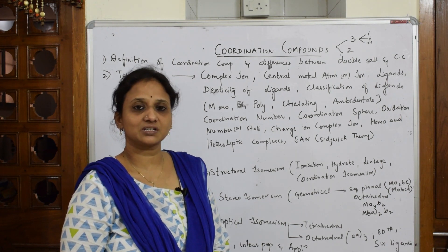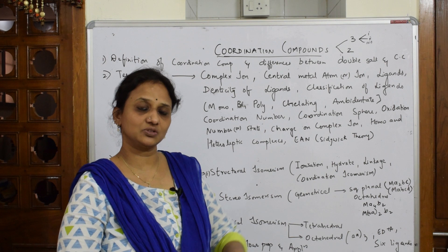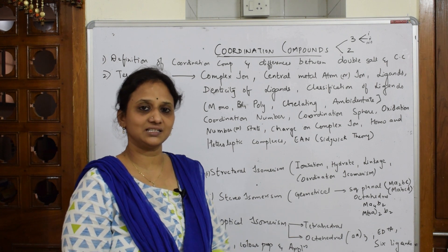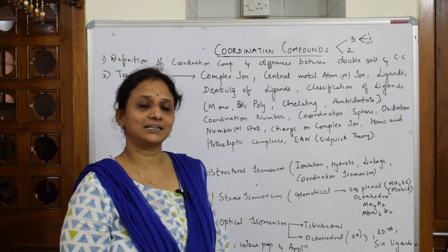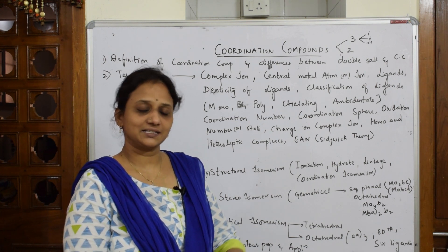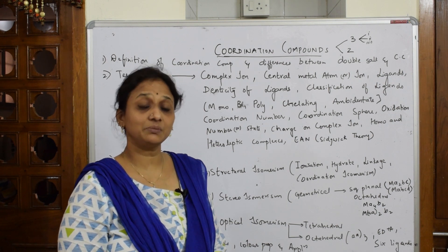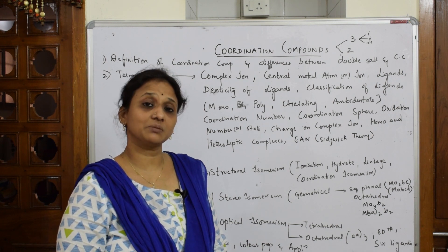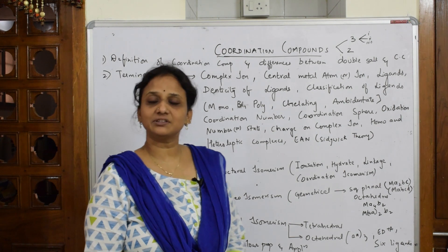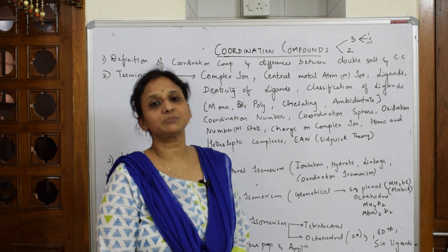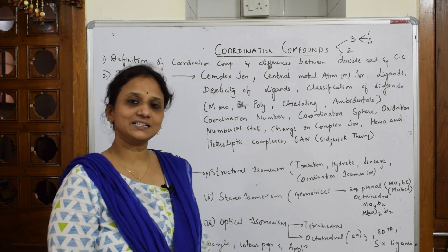They may ask why a compound is magnetic in nature, why it is colorless in nature, what its magnetic property is, or what metal carbonyls are. I'll be discussing everything. The weightage of marks is five, so let us go through the index before we start the chapter.